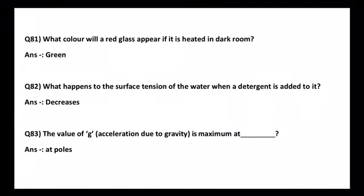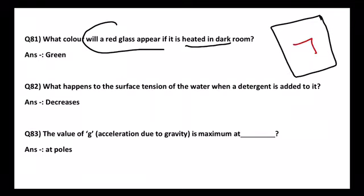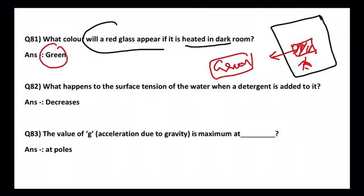Next question: What color will red glass appear if it is heated in a dark room? When you heat red glass in a dark room, it will emit green color. The complementary color wavelength will be emitted, which is green.